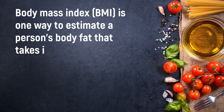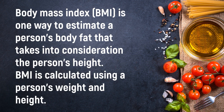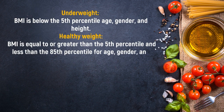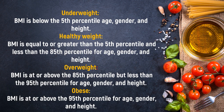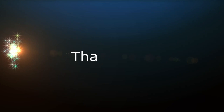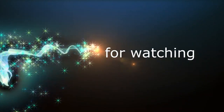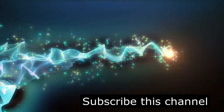BMI Measurement. Body mass index is one way to estimate a person's body fat, taking into consideration height. BMI = weight in kg ÷ (height in meters)². Underweight: BMI below the 5th percentile for age, gender, and height. Healthy weight: BMI ≥5th percentile and <85th percentile. Overweight: BMI at or above the 85th percentile but less than the 95th percentile. Obese: BMI at or above the 95th percentile for age, gender, and height.